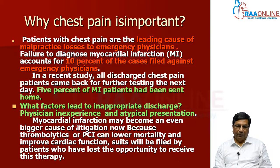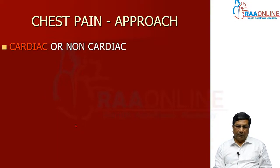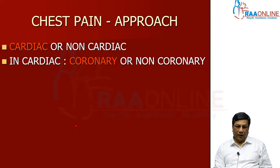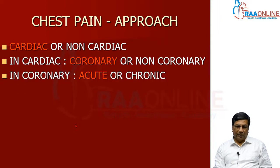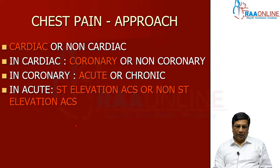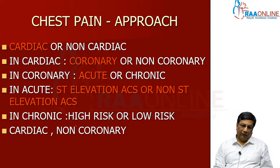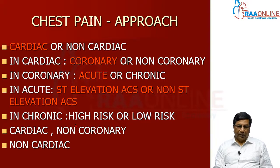For that, the history is very important, and the chest pain is important. The chest pain approach: first, we must know whether the chest pain is cardiac or non-cardiac. In cardiac, we must know whether it is coronary or non-coronary. In coronary, we must determine whether it is acute or chronic. In acute, we must know whether there is ST elevation or non-ST elevation, and whether to give a thrombolytic or not. In chronic coronary pain, we must know whether it is high risk or low risk. This information comes from history and investigations like the electrocardiogram.